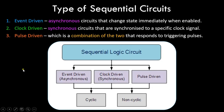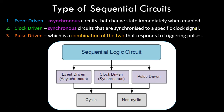There are different types of sequential circuits — three types: event-driven, clock-driven, and pulse-driven. In event-driven, the circuits are asynchronous in nature, meaning they are not timed; they change their state immediately when enabled depending on the input applied. Clock-driven circuits are synchronized to a specific clock signal — an external circuit providing input at regular intervals. Pulse-driven is a combination of the two and responds to triggering pulses. There are also cyclic and non-cyclic sequential circuits which are further categorized.